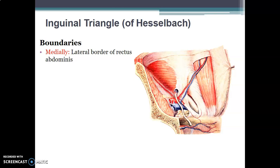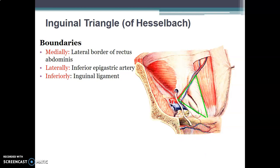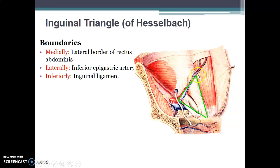The Hesselbach's triangle, or inguinal triangle, has the following boundaries: medially, the lateral margin of the rectus abdominis muscle; laterally, the inferior epigastric vessels; and inferiorly, the inguinal ligament running from the anterior superior iliac spine to the pubic tubercle.